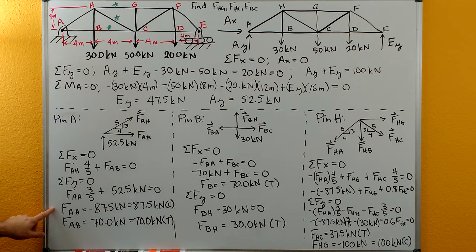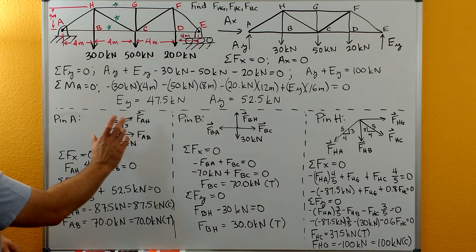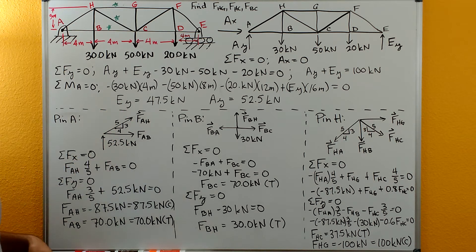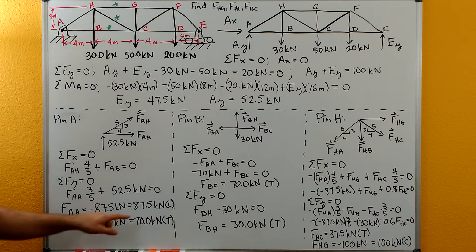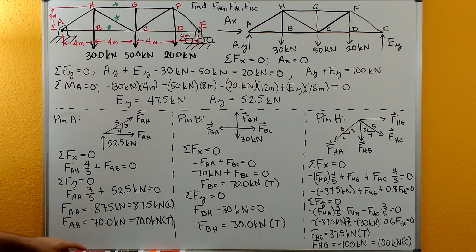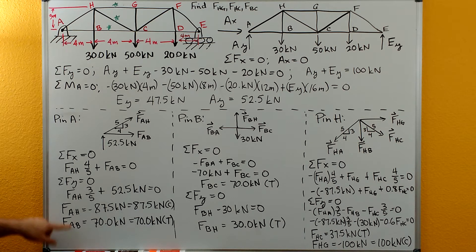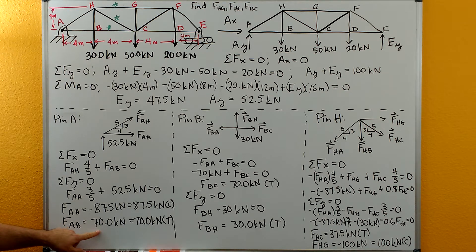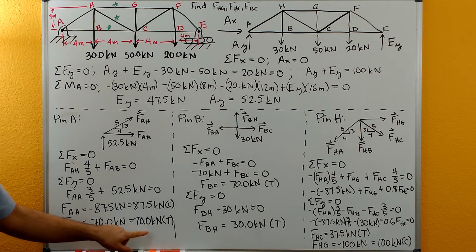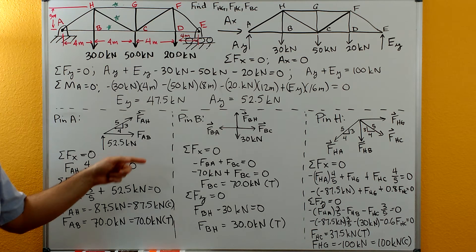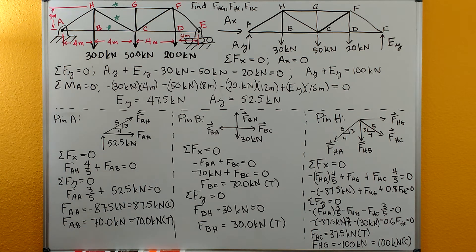We can solve that for FAH and we get a negative number. The negative means that the direction is flipped around on FAH. We drew it as if it was in tension; since we got the negative that means it must be in compression. So I write the C next to it for compression. Then FAB we can solve for it by plugging in FAH here and we get 70 newtons. We got a positive number there so that means our direction was correct and that we're in tension instead of compression.